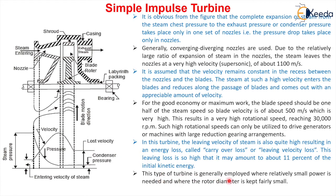This type of turbine is generally employed where relatively small power is needed and where the rotor diameter is kept fairly small due to space constraints for installing the rotor. This concludes the discussion on the simple impulse turbine.